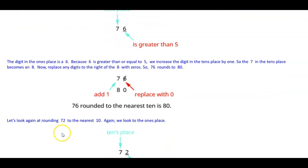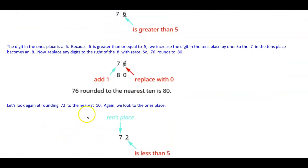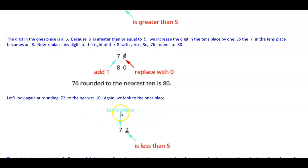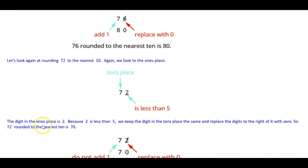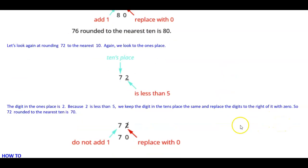Now let's look again at rounding 72 to the nearest 10. We look at the ones place. The tens place is 7, and the number to the right is 2. Since 2 is less than 5, we keep the digit in the tens place the same and replace the digits to the right with 0. So 72 rounded to the nearest 10 is 70.